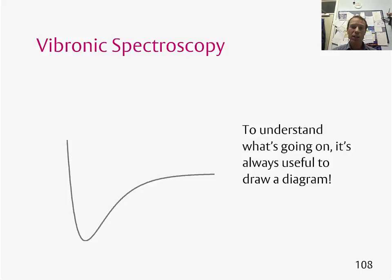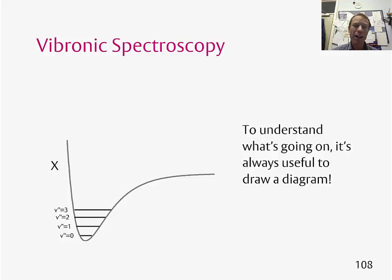We can draw a Morse curve for the ground state, which we call X. Within this ground state there are vibrational energy levels, which we label V double-primed equals 0, 1, 2, 3, and so on.